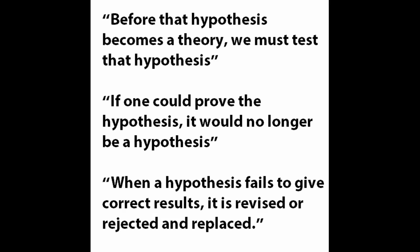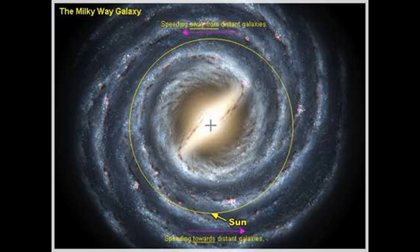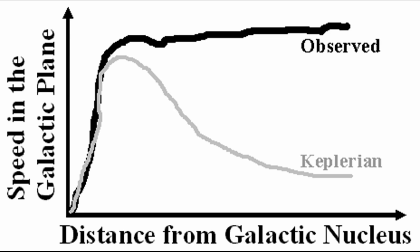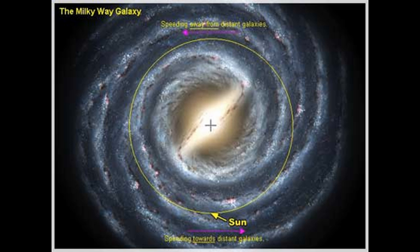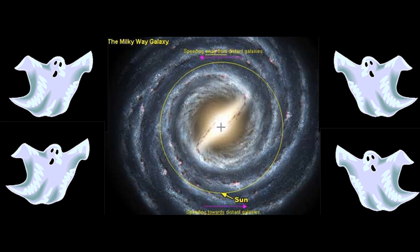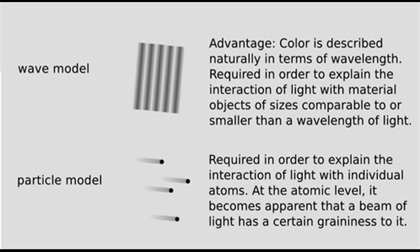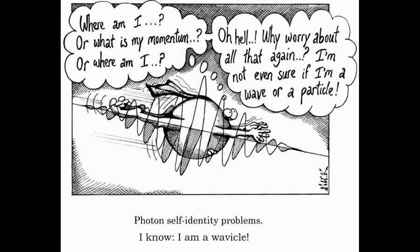When a hypothesis fails to give correct results, it is revised or rejected and replaced. Except in mathematical physics — for example, when Einstein's relativity failed to describe the galactic rotation problem, the idiots of mathematics did not reject relativity. They simply invented something ad hoc called dark matter. Likewise, when they could not explain light with either the wave or the corpuscular models, they did not reject quantum mechanics. They blended the two and called the result a wave packet.